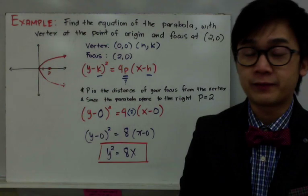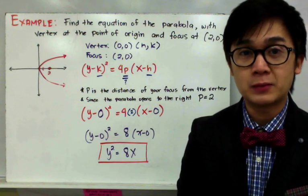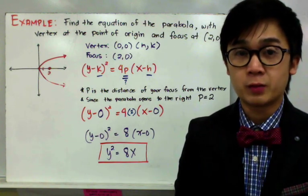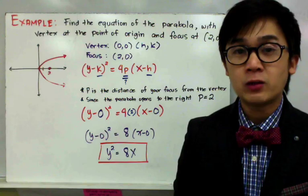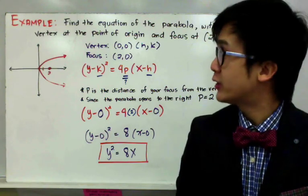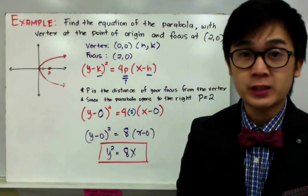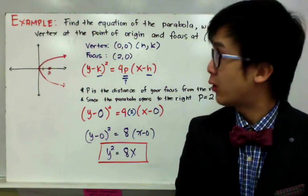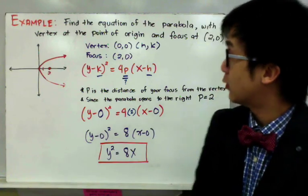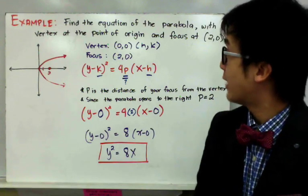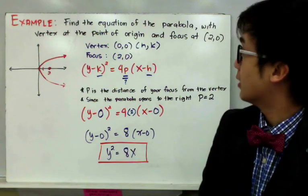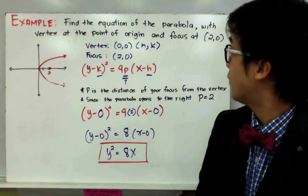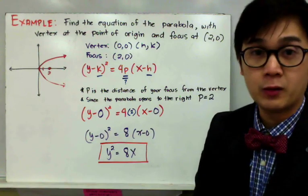Now that we know the graphs of a parabola and the special parts of a parabola, let's start to write the equation of a parabola given its parts. In our first example, we need to find the equation of the parabola with vertex at the point of origin and the focus at (2, 0).